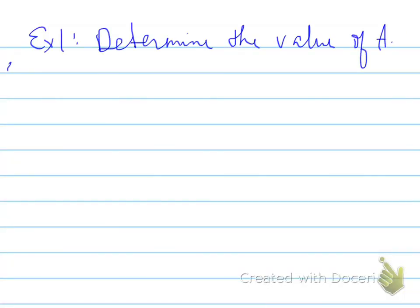Let's continue. Example 1: Determine the value of A where sin A = -1/√2, and A is between 0° and 360°. We're looking at sin A, and the value of the ratio is negative.